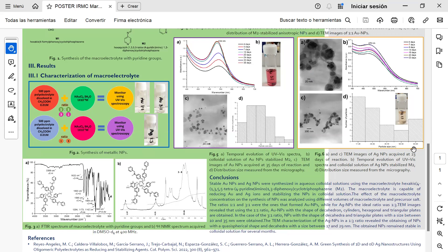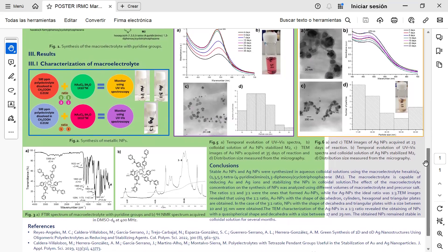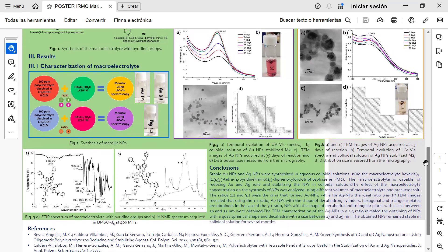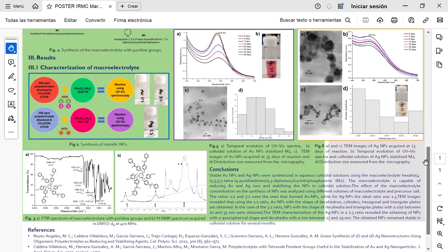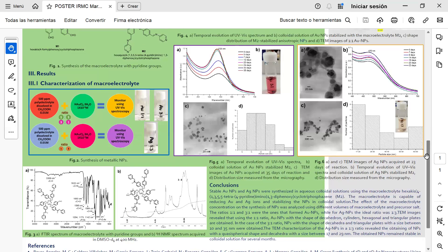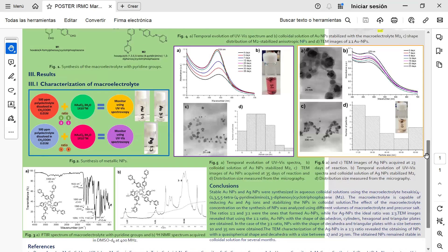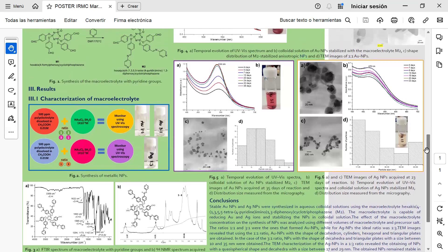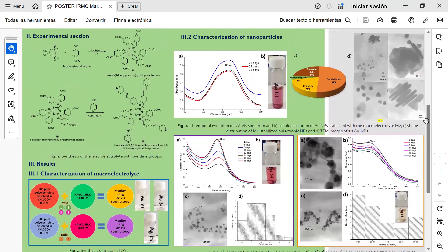The macroelectrolyte M2 is capable of reducing gold and silver ions and stabilizing the nanoparticles in colloidal solution.